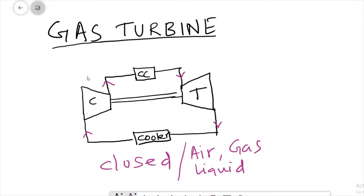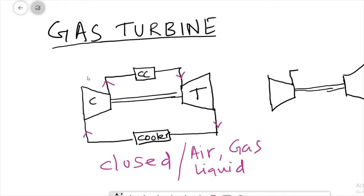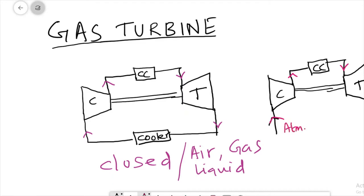Now let us look at the open type gas turbine. The main arrangement also includes a compressor and a turbine, with a combustion chamber in between. Here, atmospheric air is taken as the working medium — atmospheric air is the only medium used. The flow direction goes from the compressor to the combustion chamber and then to the turbine.